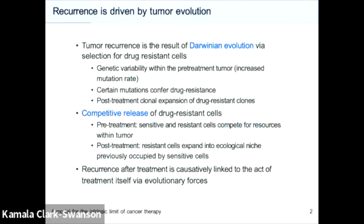The classical paradigm of how these resistant tumors emerge is that of Darwinian evolution. Specifically, during the process of tumorigenesis and clonal expansion, some subclones in the tumor are going to accumulate mutations that confer resistance to whatever treatment you apply. Once you apply that treatment, it acts as a positive selection force on the drug-resistant genotype and phenotype. Building on that, we also have the view of competitive release as contributing to the emergence of treatment-resistant tumors.